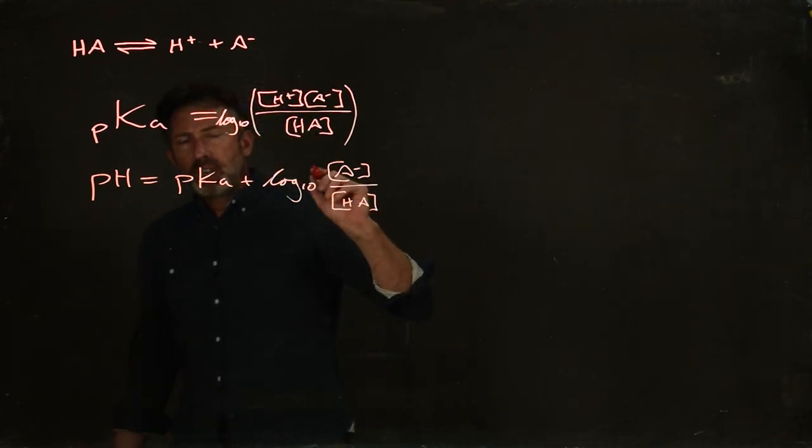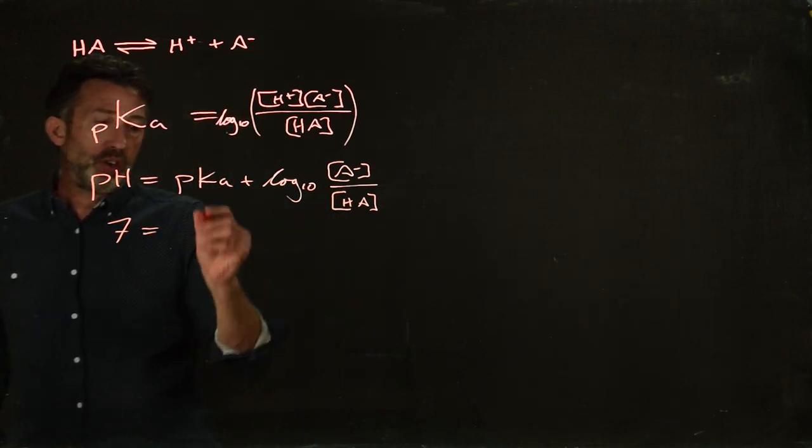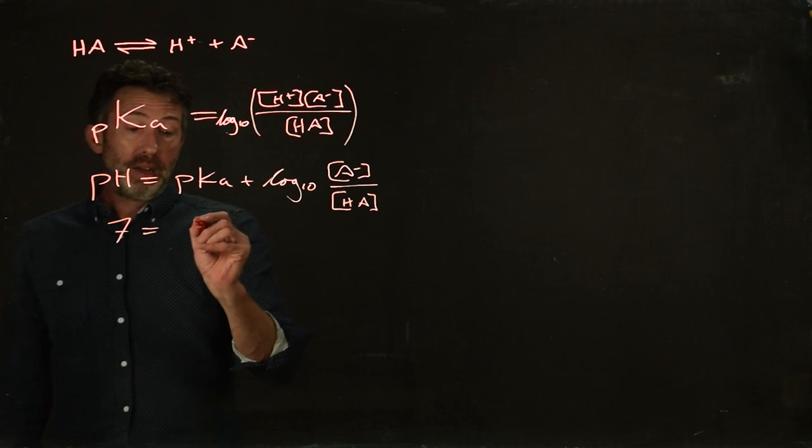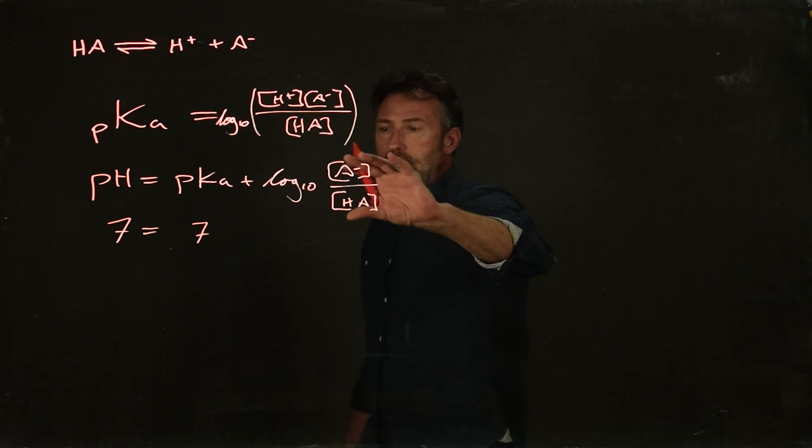And let's imagine we wanted to keep the pH at 7, and we chose a buffer that had a pKa of 7. Well, that would mean that this log 10 term, this term here, would have to equal 0.